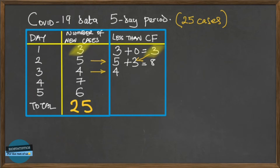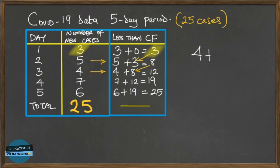For day three we had four cases, and we already had eight from the previous two days, so we add those to get 12. Continuing, day four gives us 19 and day five gives us 25.